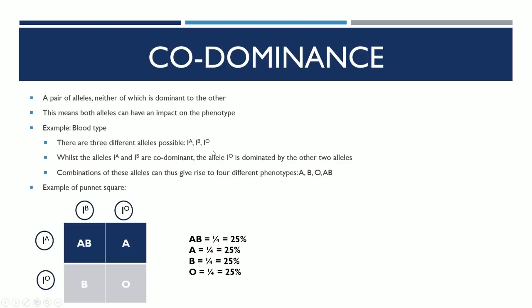In most cases, one allele will dominate over the other. However, sometimes a pair of alleles can have no dominance over the other, and that means both alleles can have an impact on the phenotype. Blood type is a prime example of this. There are three different types of alleles possible encoding for blood type: allele A, B, and O, governed under the symbol I. The allele for blood type A and B are co-dominant with each other, but the allele for O is dominated by the other two. These three different alleles can give rise to four potentially different phenotypes: A, B, O, or AB.